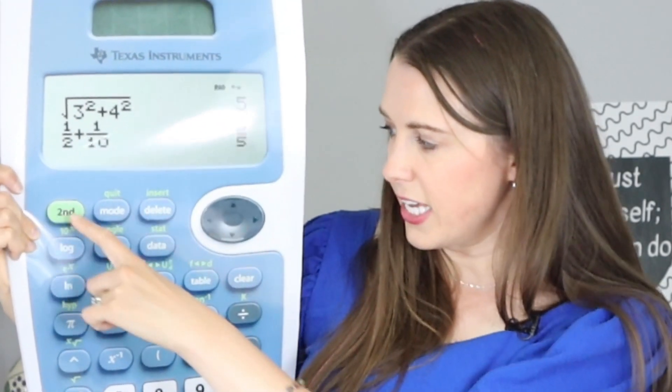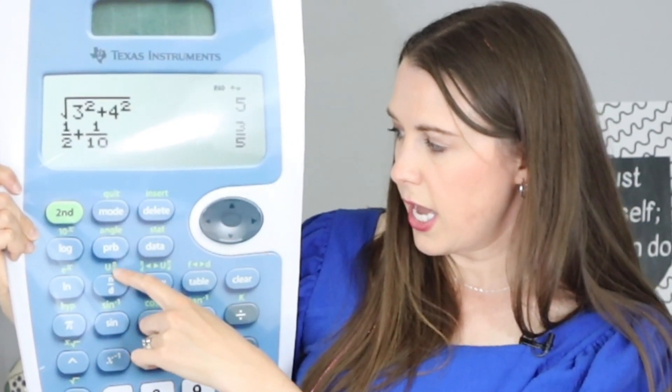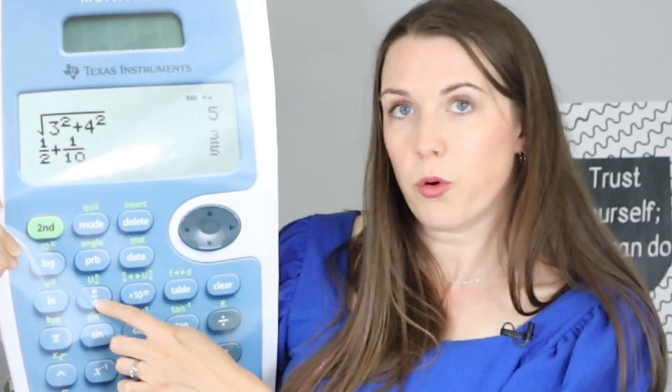And you can also hit second, n over d, and then that gives you the u, n over d, and that gives you a mixed fraction. So this is going to be a really important button.